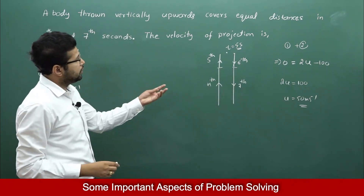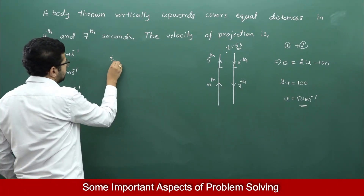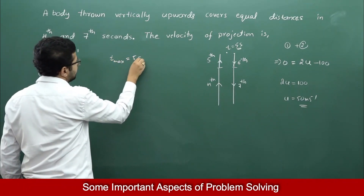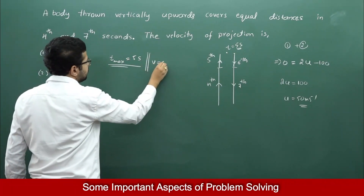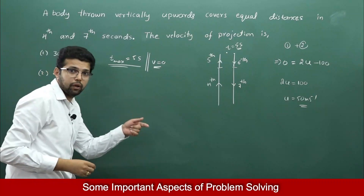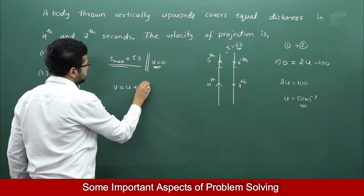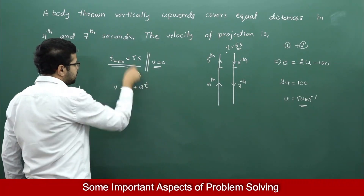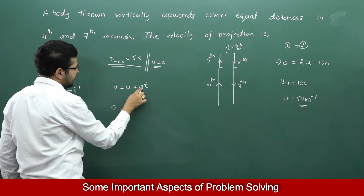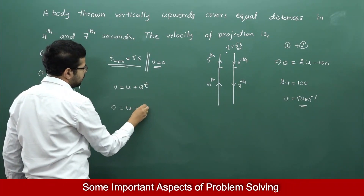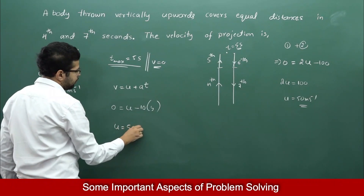So we understand that the time of maximum height is 5 seconds, and at the maximum height velocity is 0. Therefore I can use the equation V = U + aT. When T equals the time to maximum height, V = 0: 0 = U + (−10)(5), giving U = 50 metres per second.